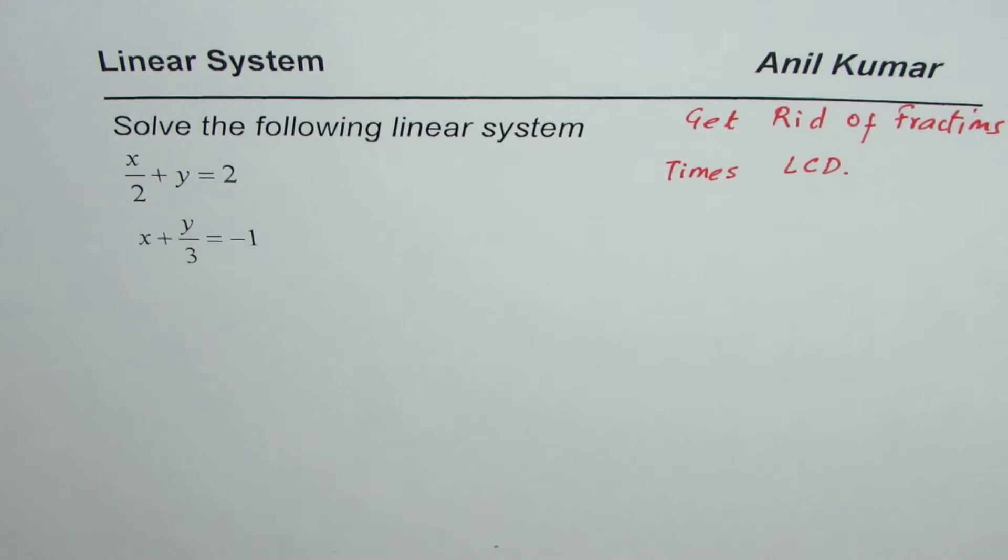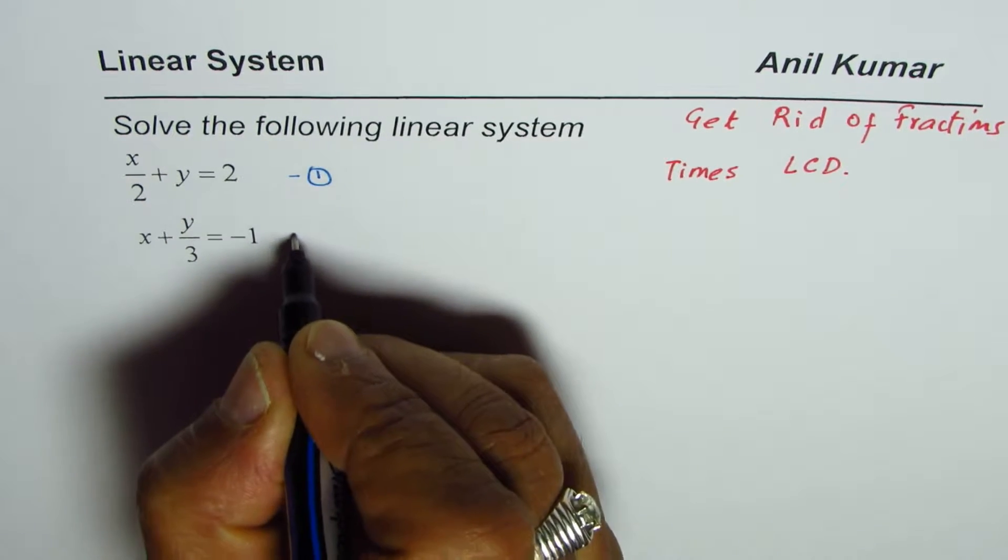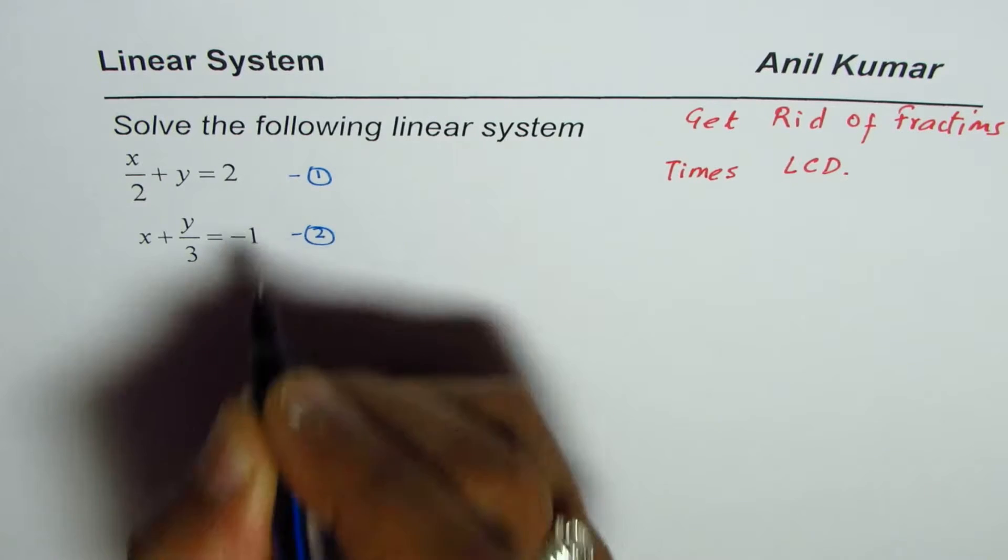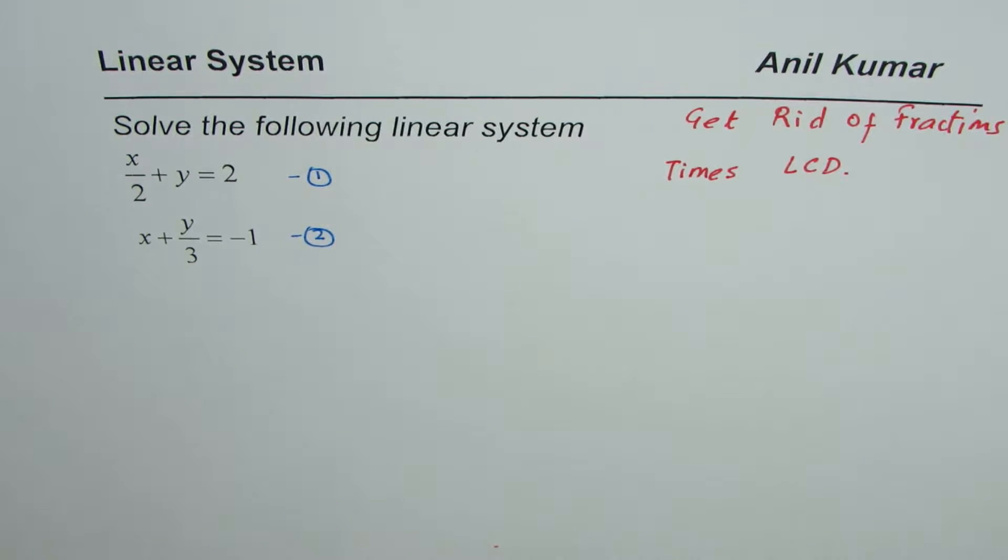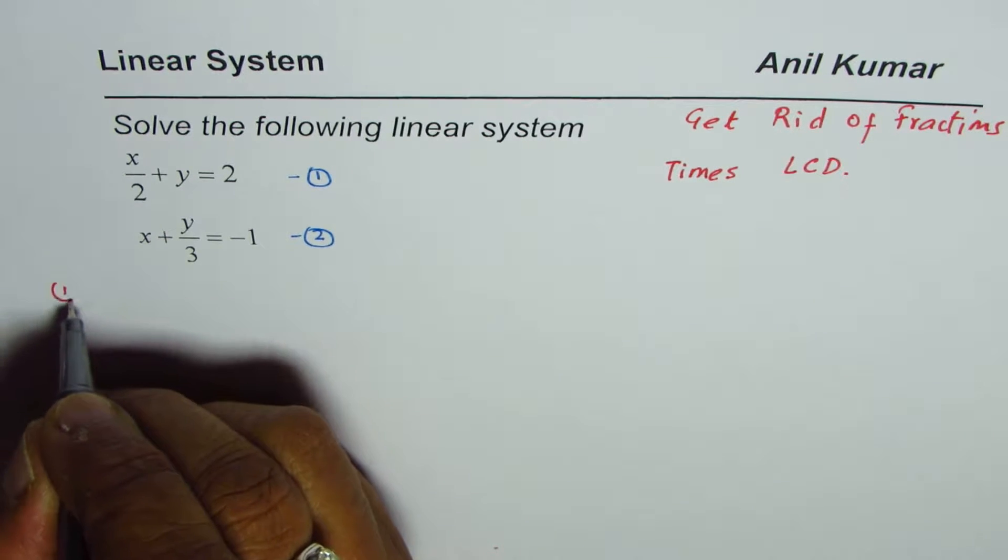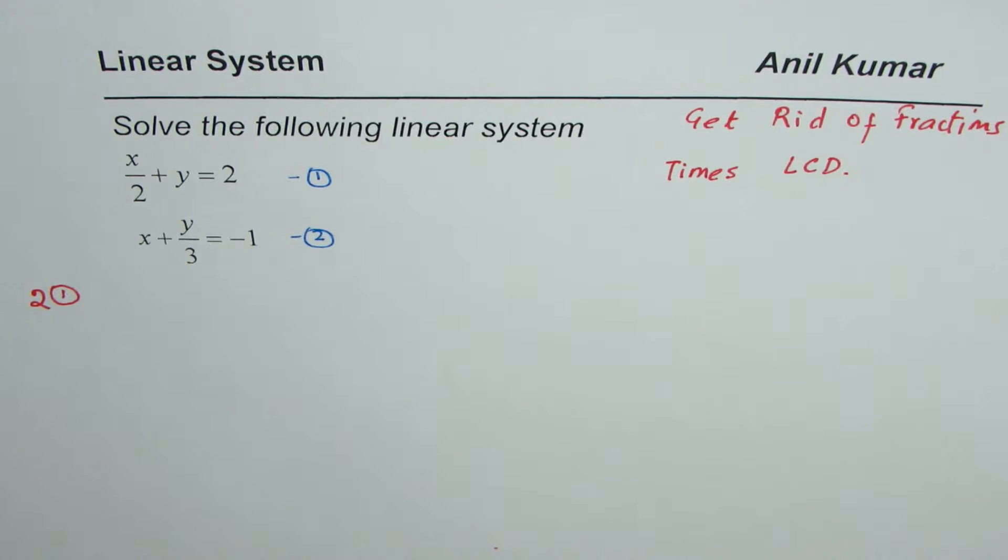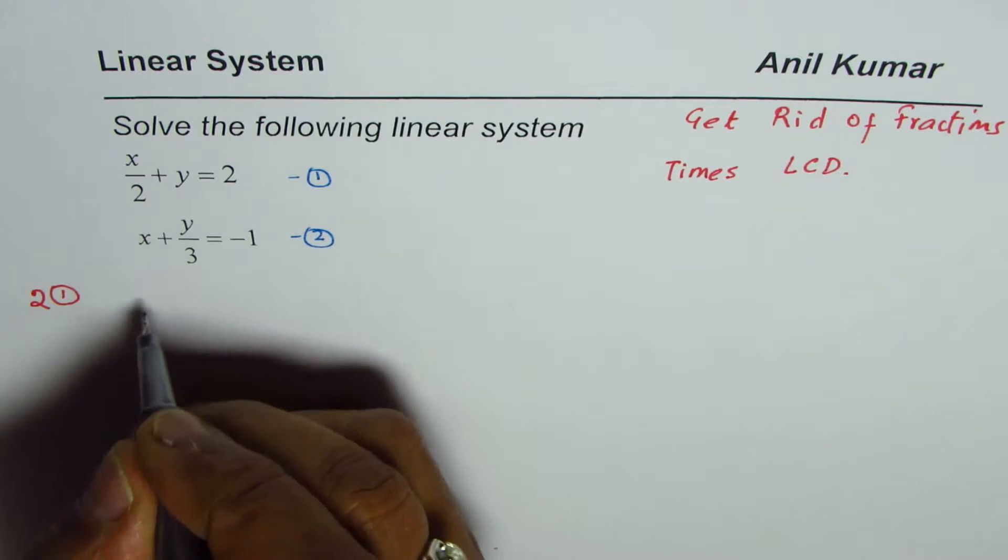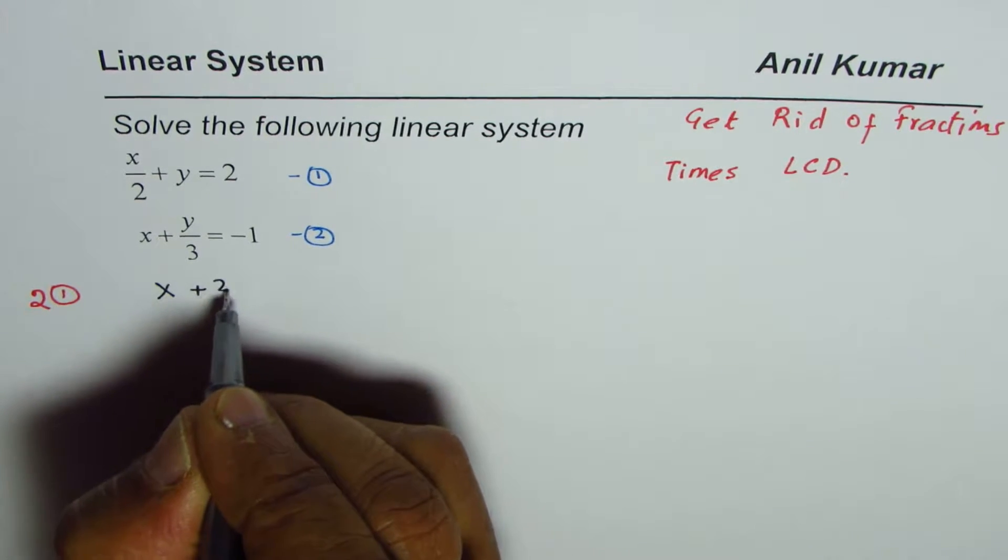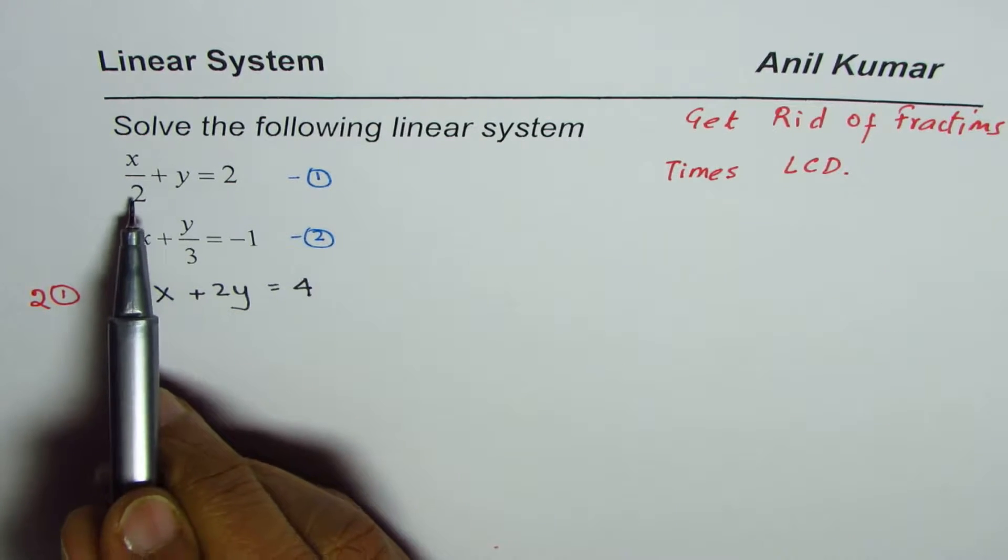So we have equation number one here and this is our equation number two. What we will do is multiply equation number one by two. So once we do that we get x plus 2y equals 4. That is how we are getting rid of fractions.